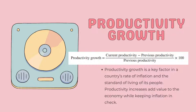For productivity growth, it is equal to current productivity minus previous productivity, all over previous productivity, times 100. Productivity growth is a key factor in a country's rate of inflation and the standard of living of its people. Productivity increases add value to the economy while keeping inflation in check.